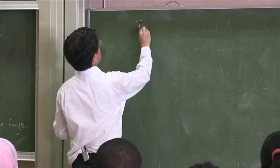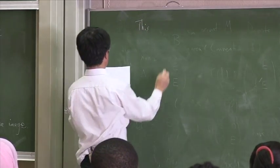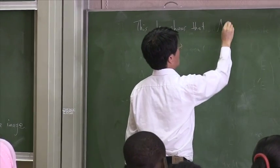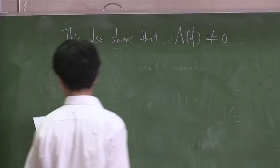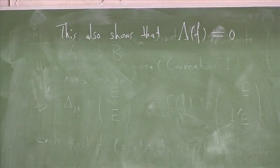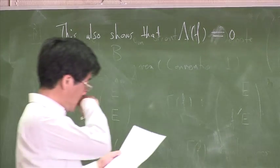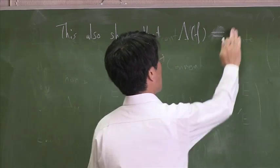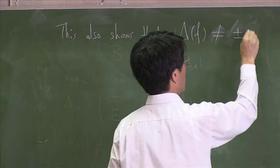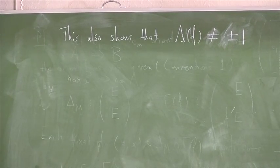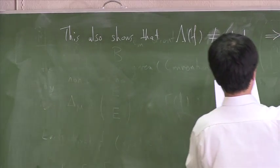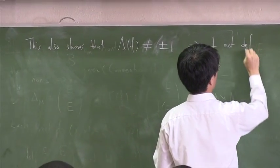This theorem also shows that the Lefschetz number being not equal to plus or minus one, so it can be two, three, zero and so on, but it's not plus or minus one, means that F is not deformable to a constant map.